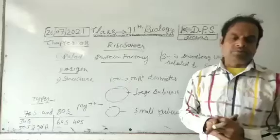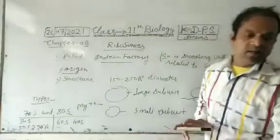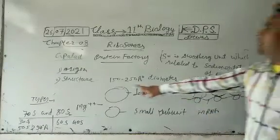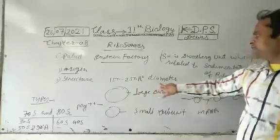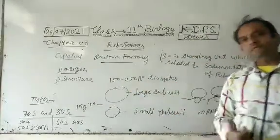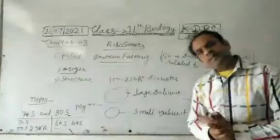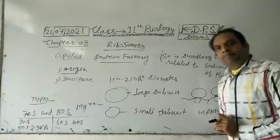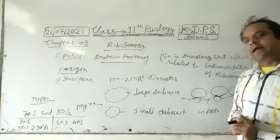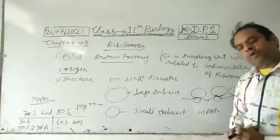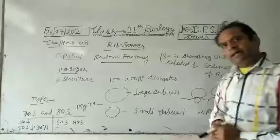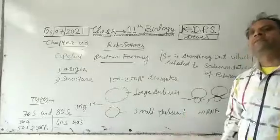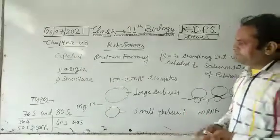Let's see the structure of the ribosomes. The ribosomes are made of two sub-units: a large sub-unit and a small sub-unit. The large subunit and small subunit connect to each other by the magnesium ions.